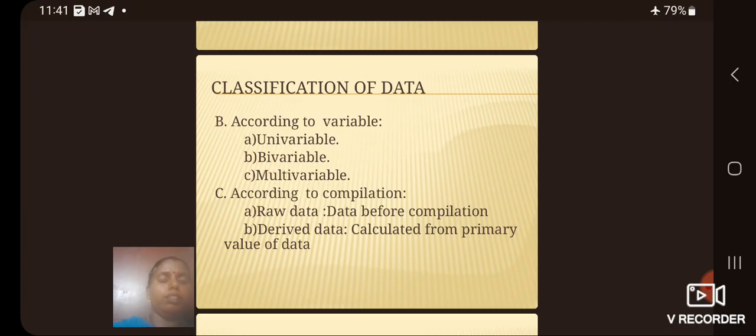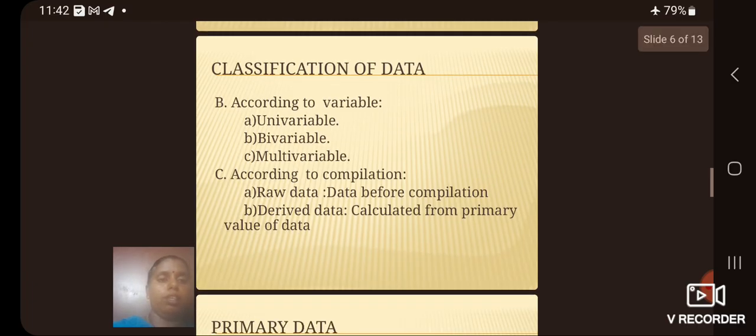Classification of data according to variable: it is divided into univariable, bivariable and multivariable. According to compilation, it can be divided into raw data and derived data.